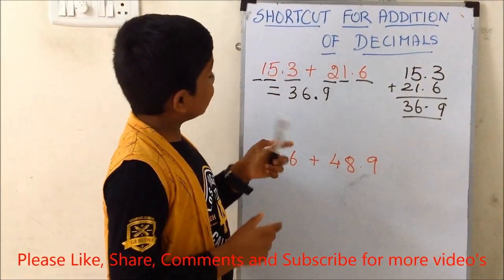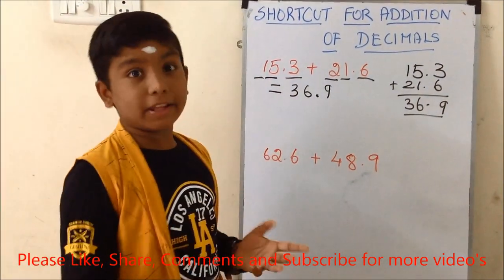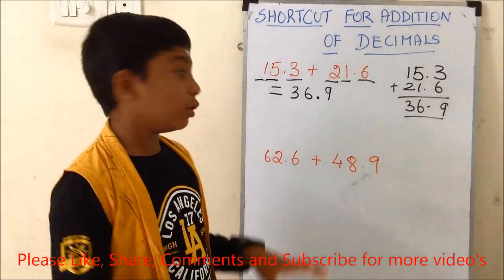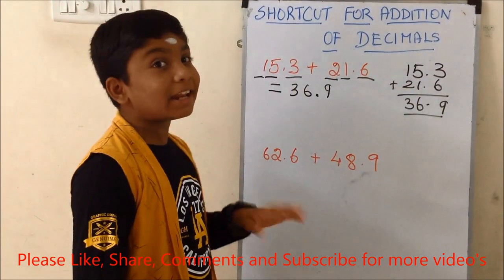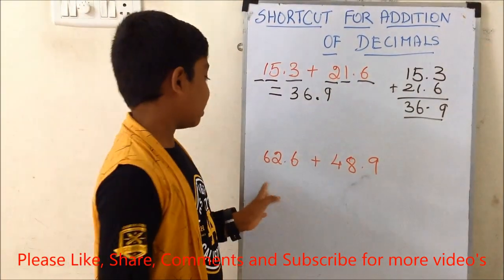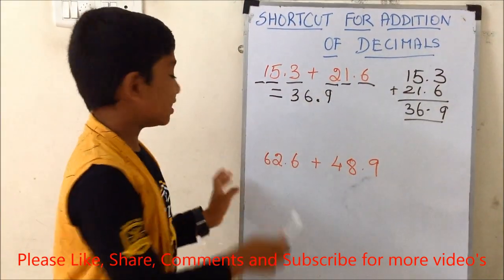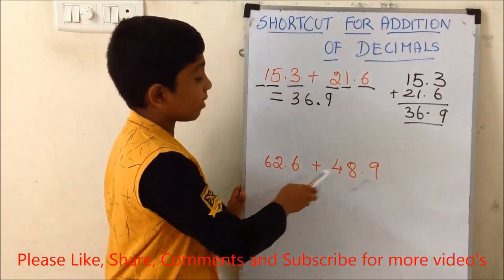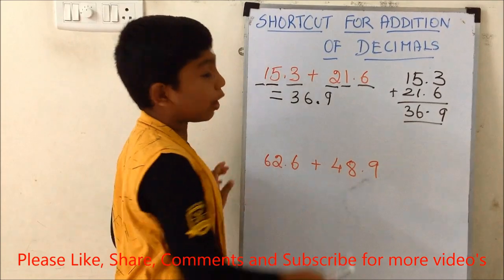Now this method is very easy for us to do. We will now take a larger number, that is 62.6 plus 48.9.